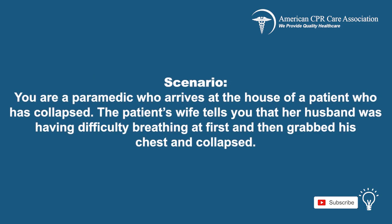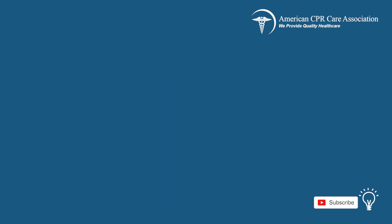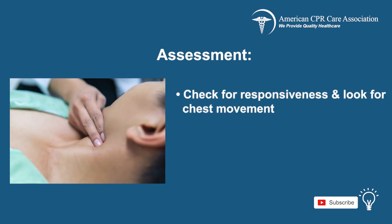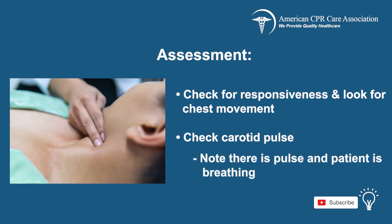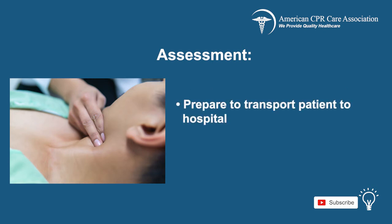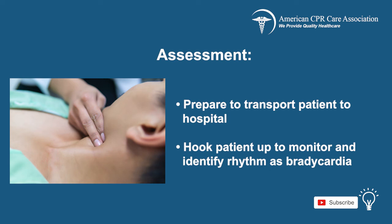Now, let's consider a scenario. You are a paramedic who arrives at the house of a patient who has collapsed. The patient's wife tells you that her husband was having difficulty breathing at first and then grabbed his chest and collapsed. First, assess the situation. Check the patient for responsiveness by tapping and shouting, "Are you alright?" Look at his chest for any movement. When you check the carotid pulse, you note that he has a pulse and is breathing. Prepare to transport the patient to the nearest hospital. You then hook the patient up to the monitor and identify the rhythm as bradycardia, or under 60 beats per minute.